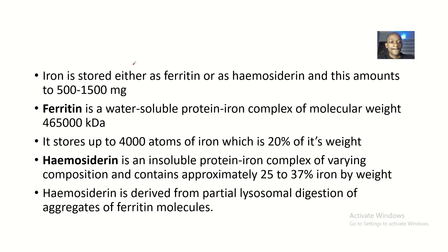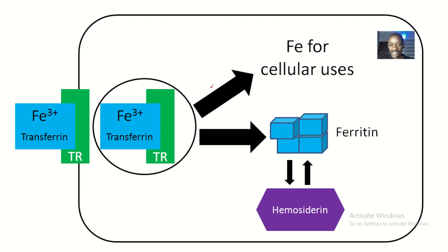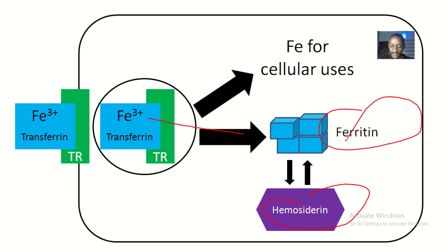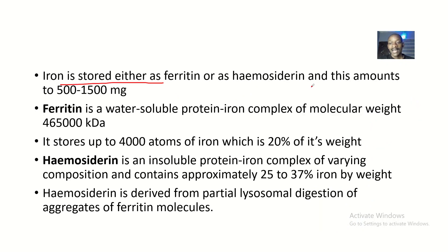Iron is stored as ferritin or hemosiderin. Iron gets into the body and is stored as hemosiderin or ferritin. The amount of iron that can be found in the storage form is about 500 to 1,500 milligrams.